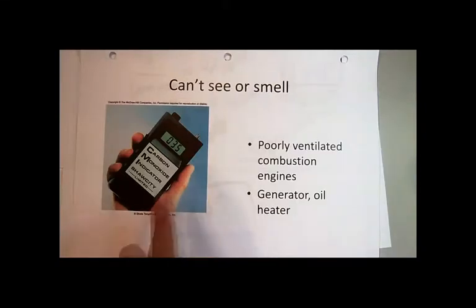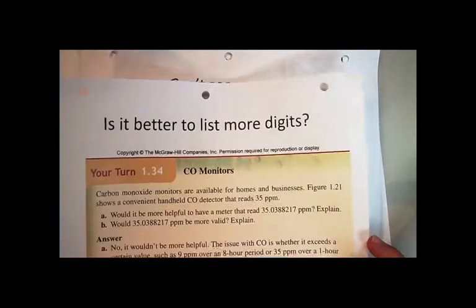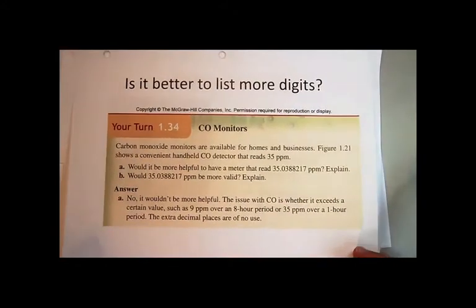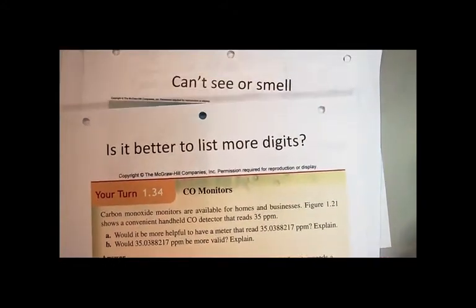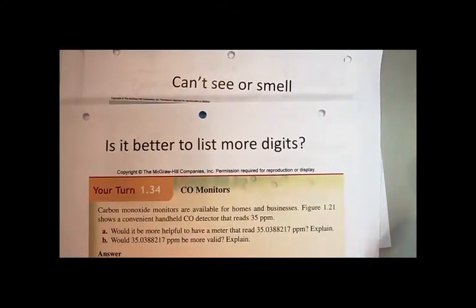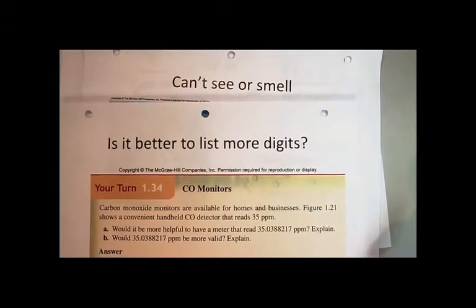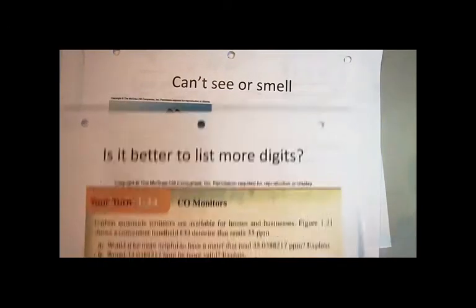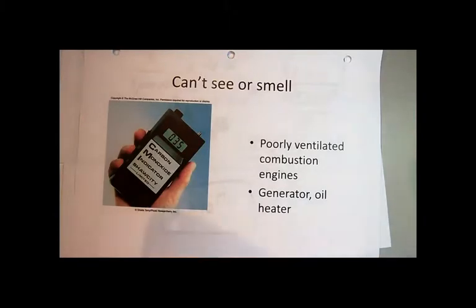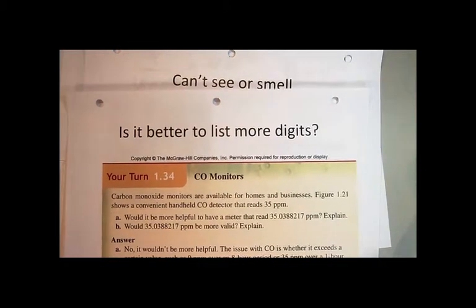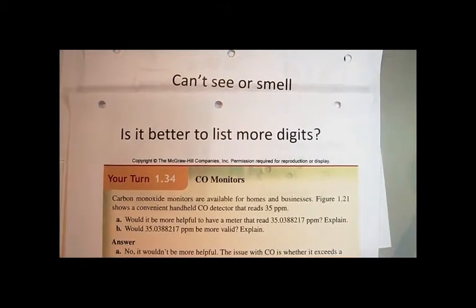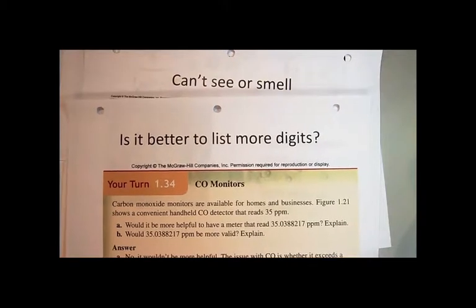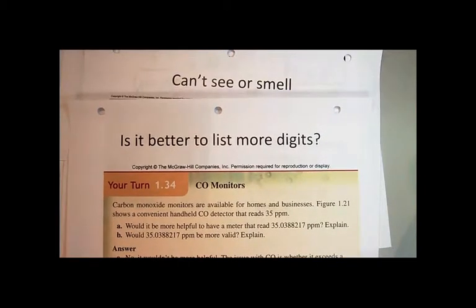Here's a question about this particular carbon monoxide sensor, concerning significant digits. The question says: carbon monoxide monitors are available for homes and businesses. In figure 1.21 — that's this figure right here — you see a carbon monoxide detector that reads 35 parts per million. The question is: would it be more helpful to have a meter that reads 35.0388217 parts per million? Please explain.